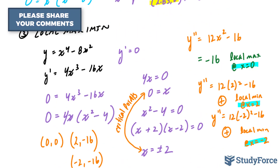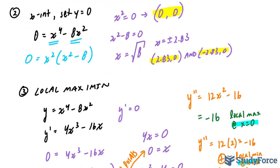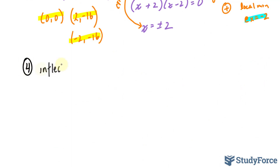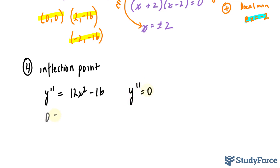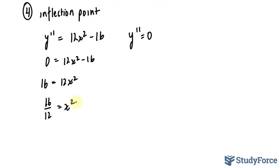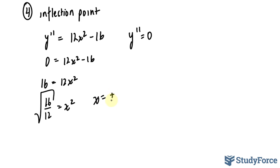Now that we've covered the maximum and minimum, the last property is the inflection points. To find the inflection points we use the second derivative, which was y double prime equals 12x squared minus 16. We set y double prime equal to 0: 0 equals 12x squared minus 16. Bringing 16 over gives 16 divided by 12 equals x squared. Square rooting both sides gives x equals plus or minus the square root of 16 over 12, which is approximately plus or minus 1.15.